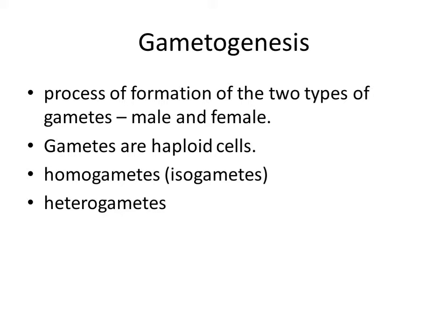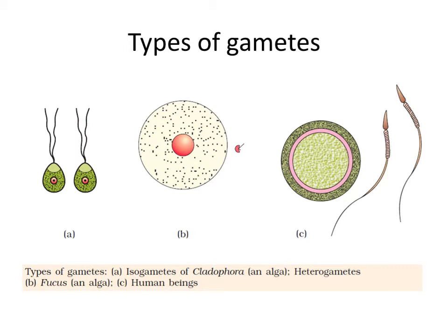In some algae, the two gametes are so similar in appearance that it is not possible to categorize them into male and female gametes. They are hence called homogametes or isogametes. However, in a majority of sexually reproducing organisms, the gametes produced are of two morphologically distinct types, called heterogametes. In such organisms, the male gamete is called antherozoid or sperm and the female gamete is called the egg or ovum. The first picture shows the isogametes of Cladophora, an alga. The second shows the heterogametes of Fucus, and the third shows the heterogametes of human beings — ovum and sperm.